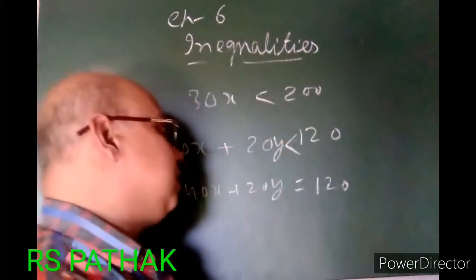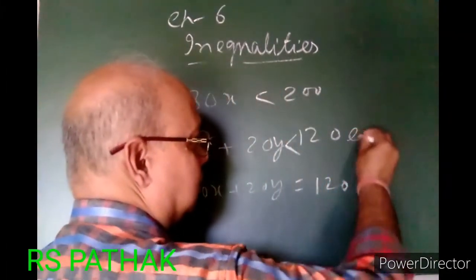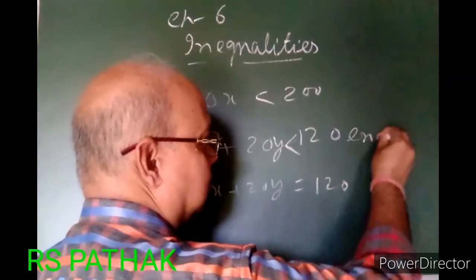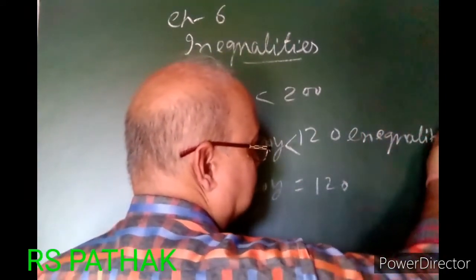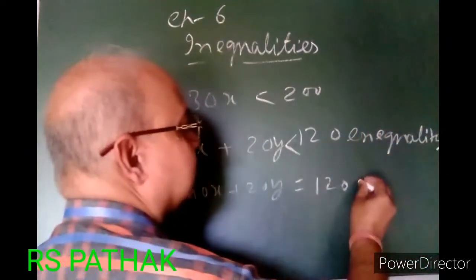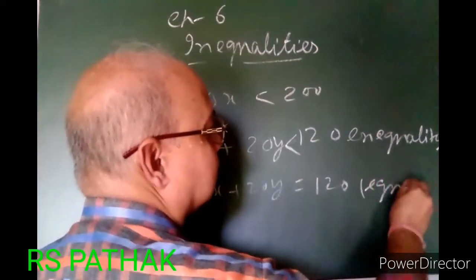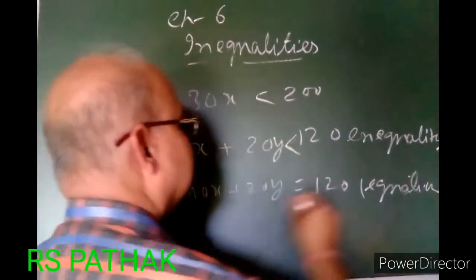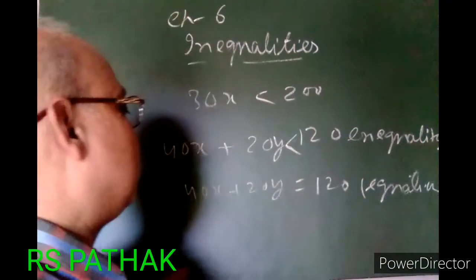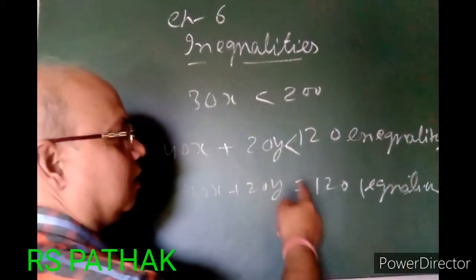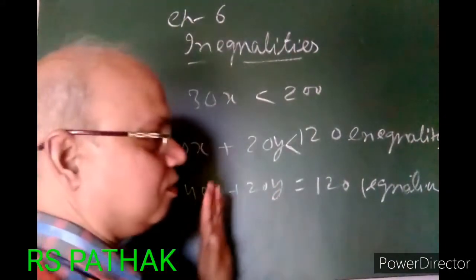When 40x plus 20y is less than 120, this is called an inequality. When 40x plus 20y equals 120, this is called an equation — because in that case both sides are equal, while in the inequality both sides are not equal.